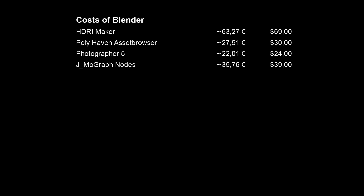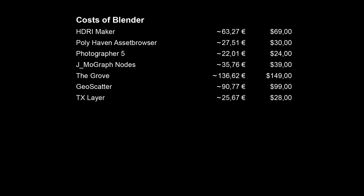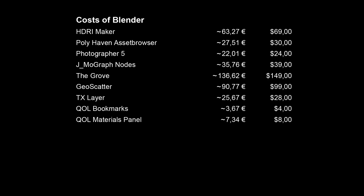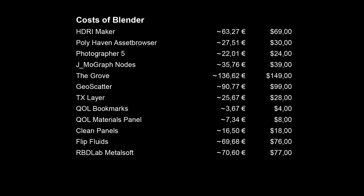Now let's review the prices for Blender add-ons, including projections for the next 10 years. HDRI Maker to replace HDRI Link: $69. Polyhaven Asset Browser for materials: $30. Photographer for better camera setup: $24. JMO Graph Nodes for motion graphics: $39. The Grove tree generator: $149. GeoScatter for scene design: $99. TX Layer for layers in painting: $28. QOL Bookmarks to save camera views: $4. QOL Material Panel for material lists: $8. Clean Panels to organize add-ons: $18. Flip Fluids for working with liquids: $76. RBD Lab for simulations: $77. TerraNode for landscapes: $25. Total cost: $647. Often a 30% discount is available, reducing the total to around $450.